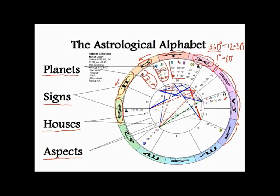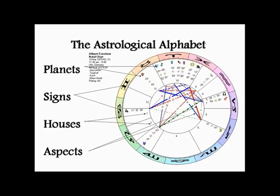Houses. In the context of what we are going to be focusing on in this course, houses will not feature very prominently — we will not be using houses a great deal. You can see that the Ascendant is marked on the left-hand side, and this left arm of a western chart is always where you will find the Ascendant — the particular point in the zodiac on the eastern horizon at the specific time and place of birth.